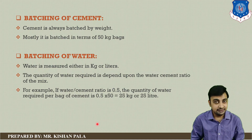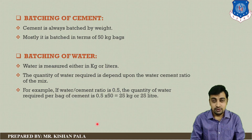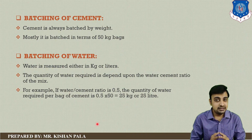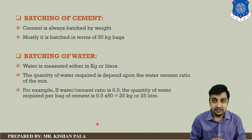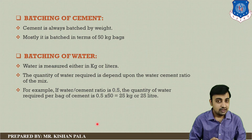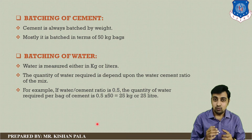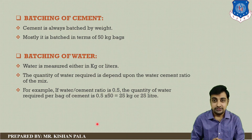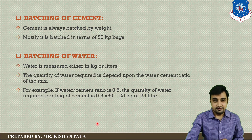To summarize: volume batching is done for small work, weight batching gives accurate results, cement is generally taken as 50 kg for reference and measured in kg, and water is taken in liters. This is all about the batching of concrete. Thank you.